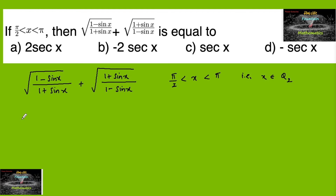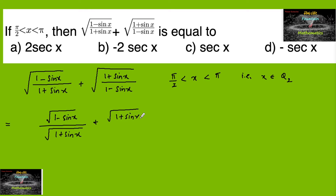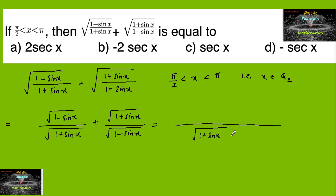This can be written as √(1 - sin x) / √(1 + sin x) + √(1 + sin x) / √(1 - sin x). By taking LCM, the denominator becomes √(1 + sin x) · √(1 - sin x).